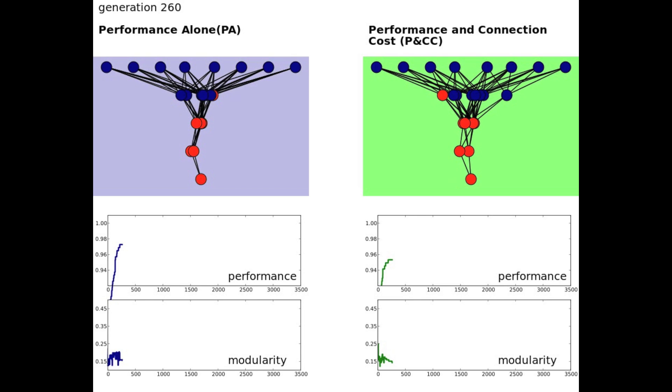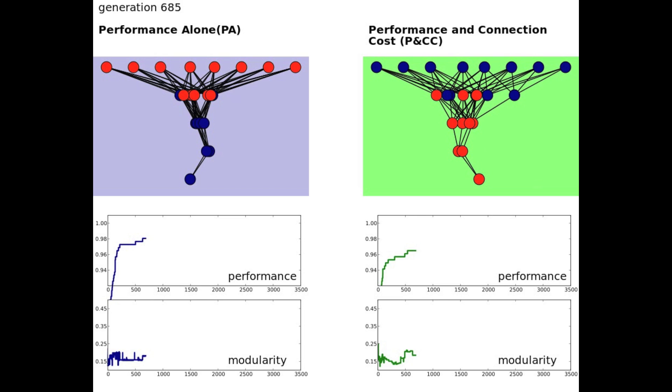Here you can see evolution in action. On the left, there is only selection for network performance, and modularity fails to increase over time.